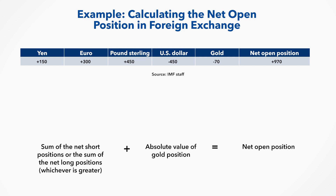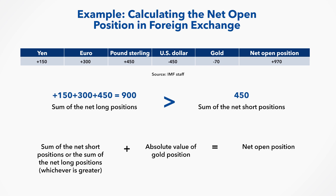In this example, the net long position in foreign exchange results from adding the higher net open position long of 900 domestic currency units to the absolute value of the short position in gold, for an overall net open position of 970.